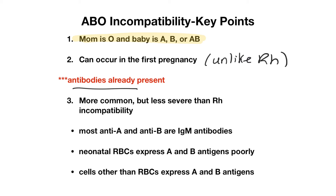ABO incompatibility is more common but less severe than RH incompatibility. This is because most of the antibodies are IgM antibodies, neonatal RBCs express the antigens poorly, and other cells besides RBCs also express both A and B antigens.